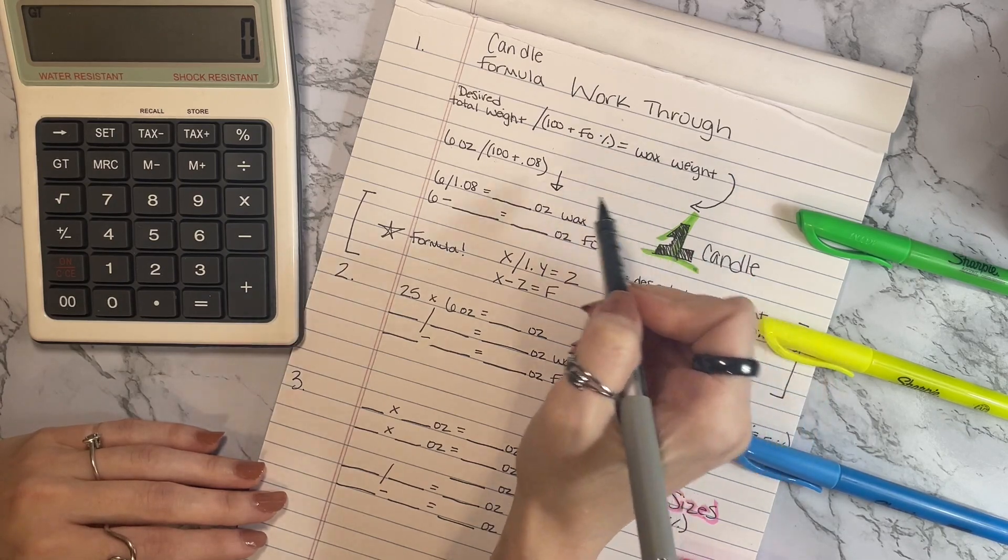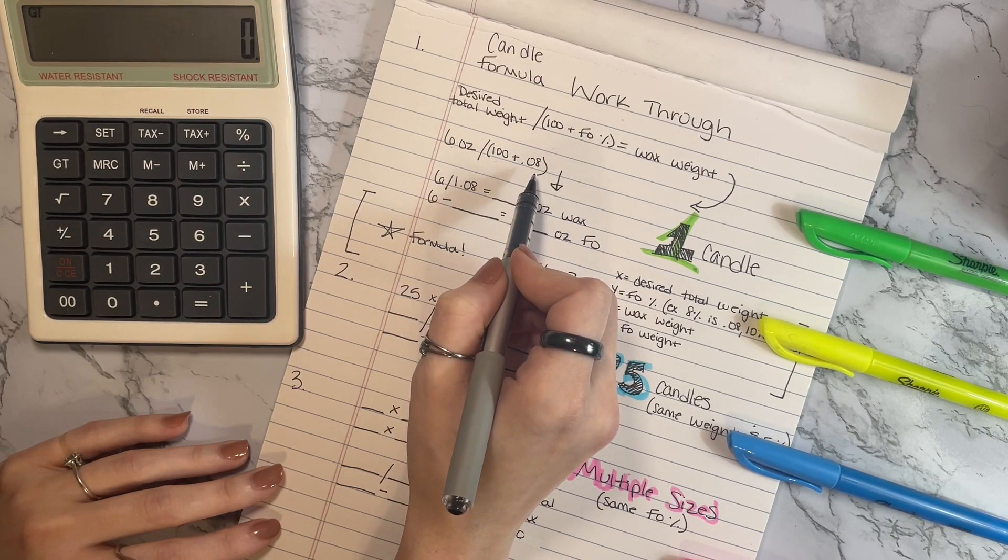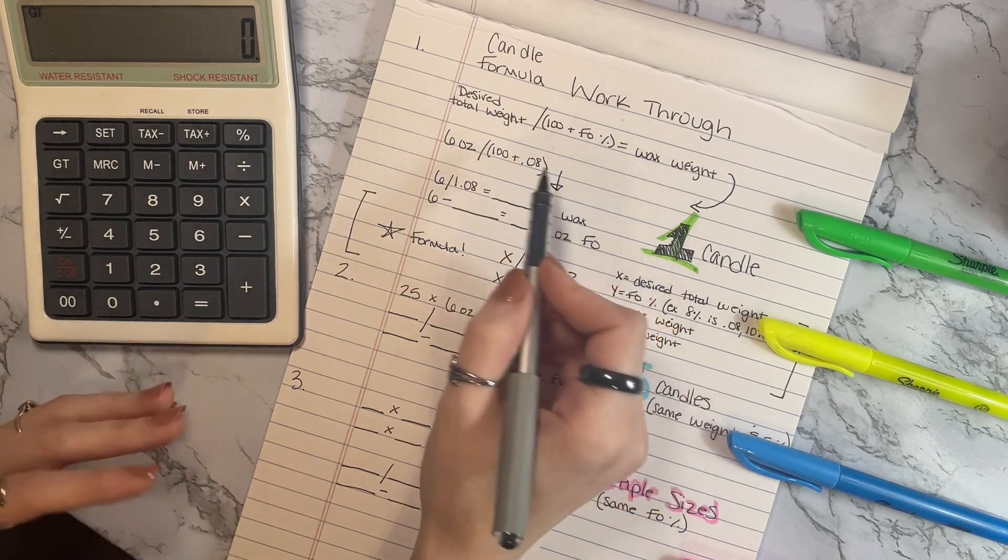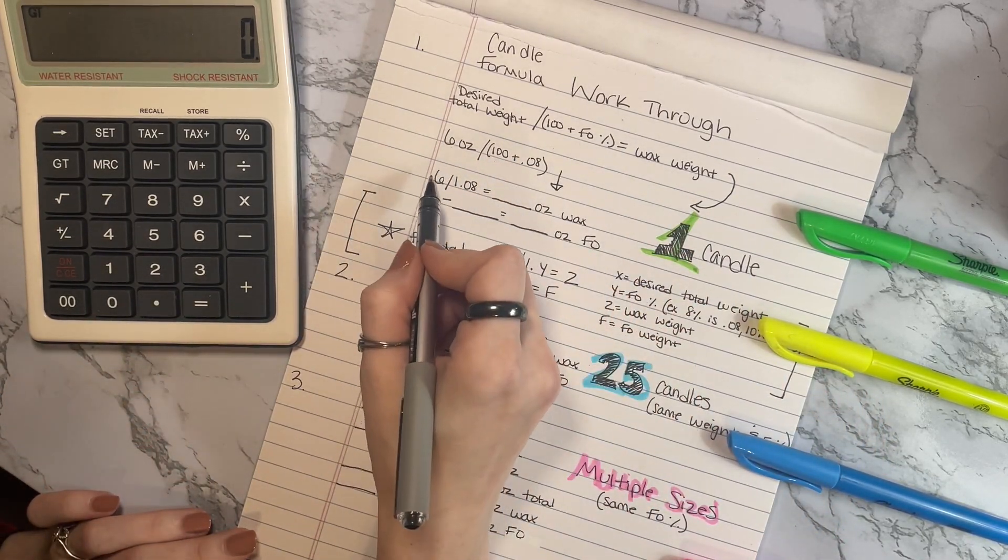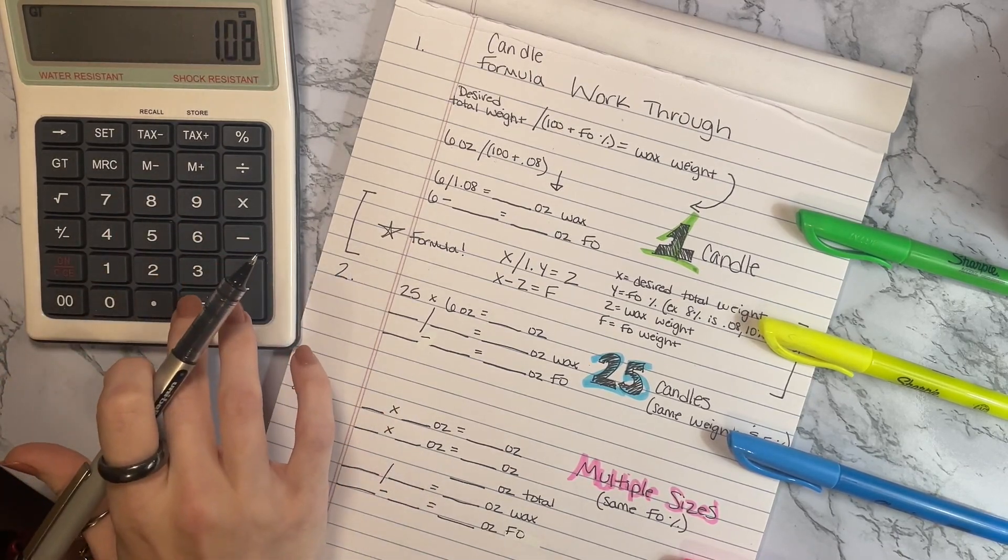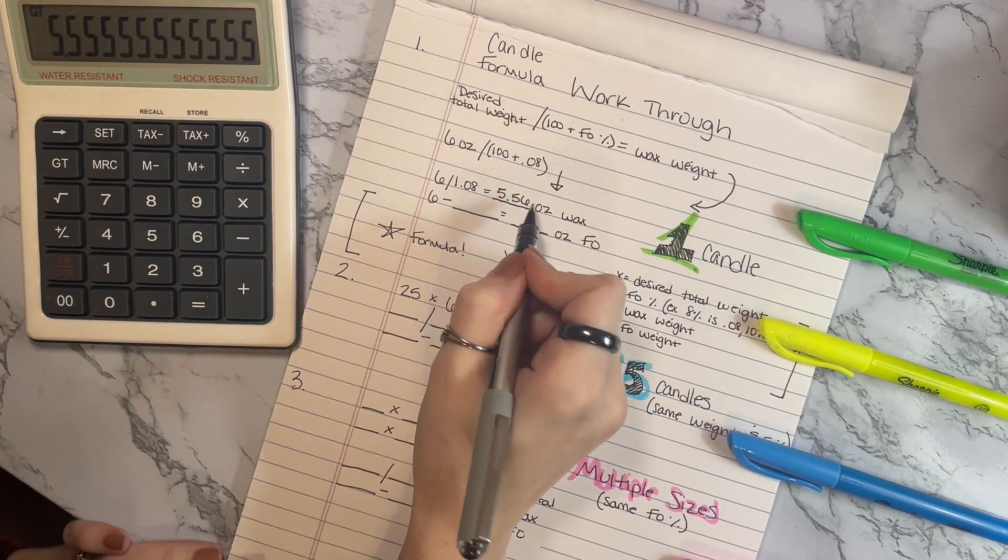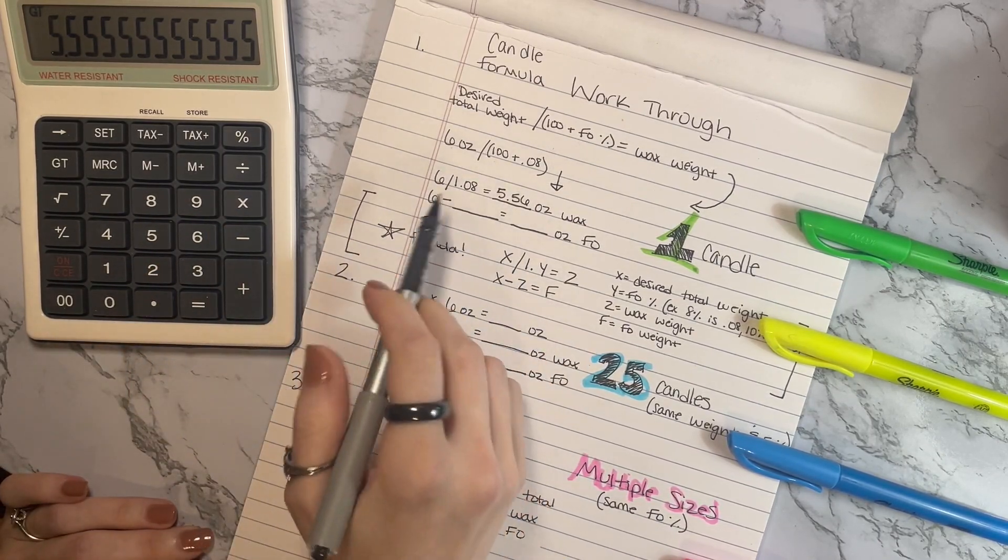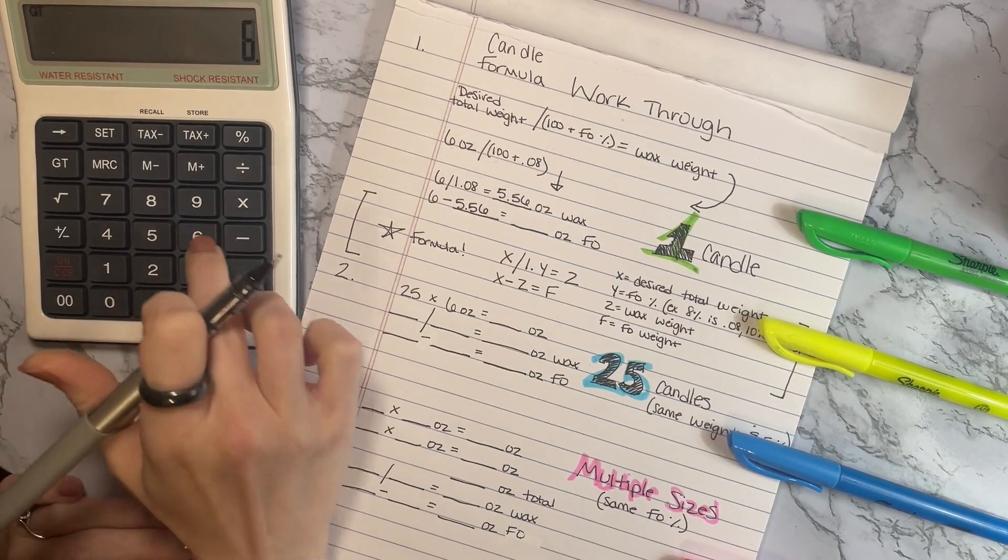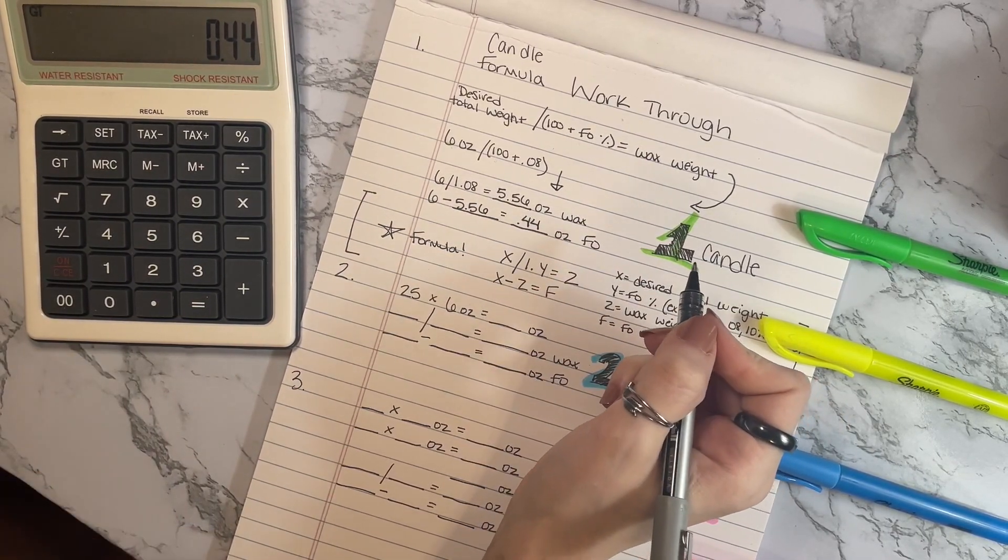To simplify this, we're going to be doing six ounces divided by 100 plus the fragrance oil percentage. This is eight percent, by the way. If you were doing ten percent it would be 0.1, if you're doing nine percent 0.09. So to simplify it even more, six divided by 1.08 is 5.56. I always round up on the second decimal point. Now you're going to do six minus 5.56, which equals 0.44, and that's going to be your fragrance oil weight. So we have 5.56 ounces wax, 0.44 ounces of fragrance oil.